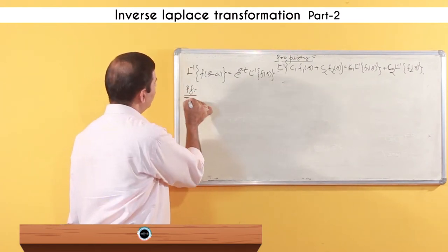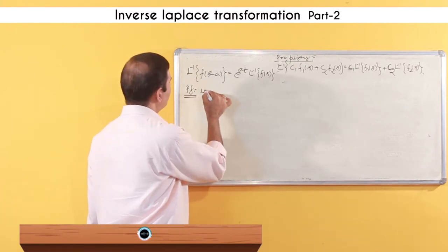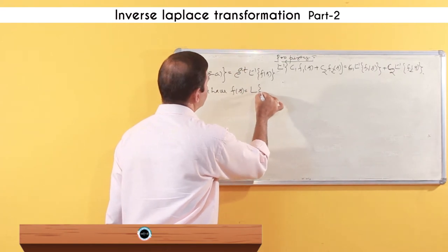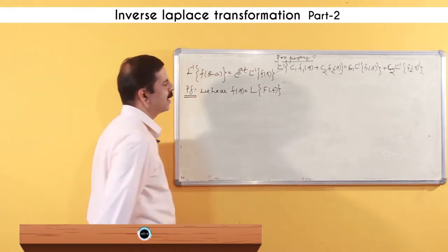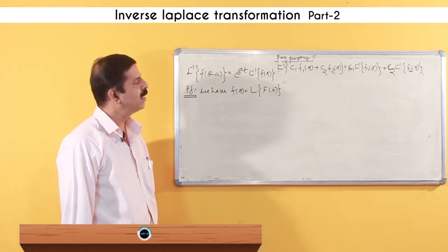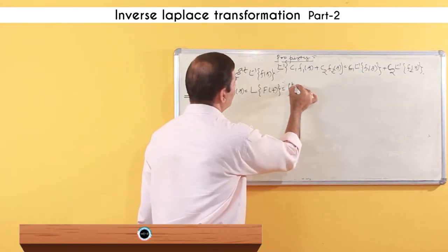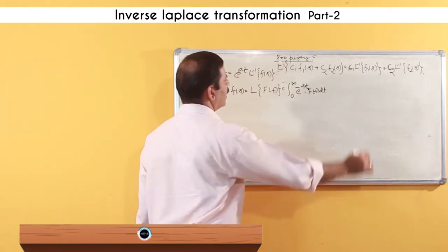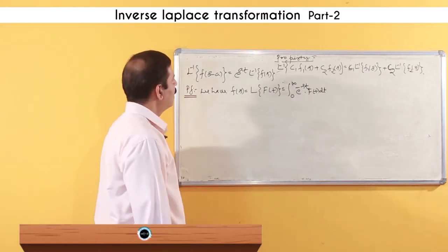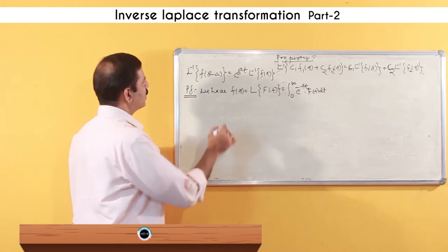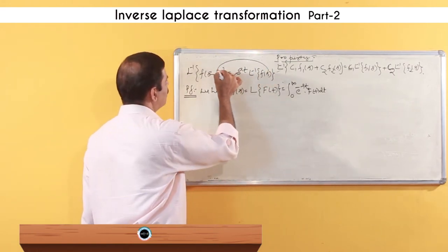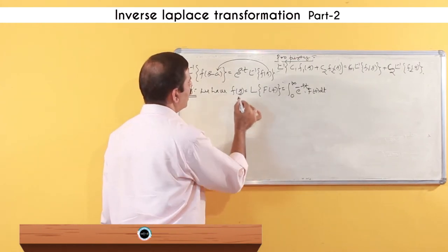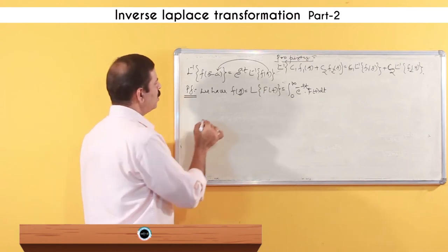The proof is very simple. We know that F(s) = L{f(t)}, which according to the definition of Laplace equals the integral from 0 to infinity of e^(−st) · f(t) dt. Now, when s becomes s − a in F(s−a), I need to reduce it to s − a, so I make the substitution replacing s with s − a.